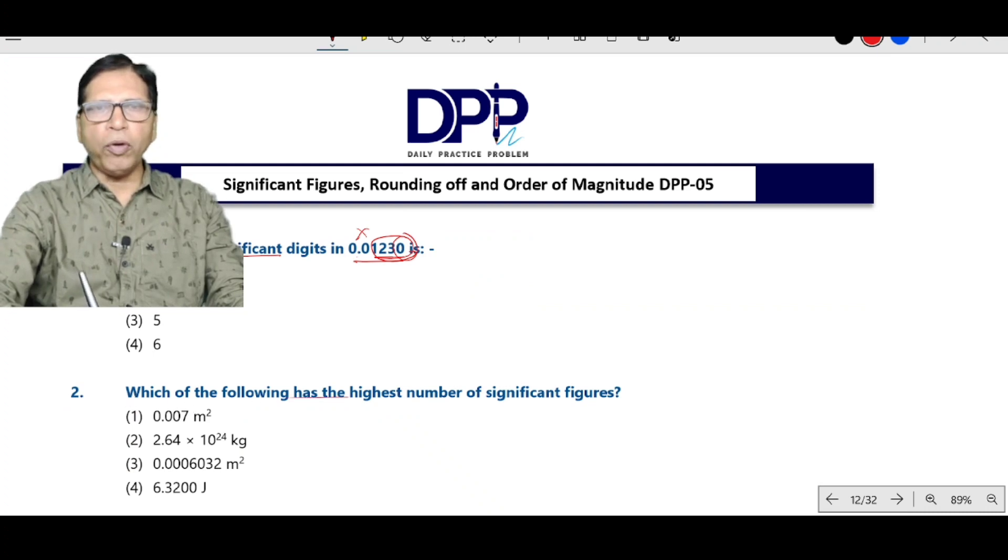Which of the following has the highest number of significant figures? This is only one significant figure. This is 3 and this is 4. And this is 5. Therefore, maximum number of significant figures is equal to 5.